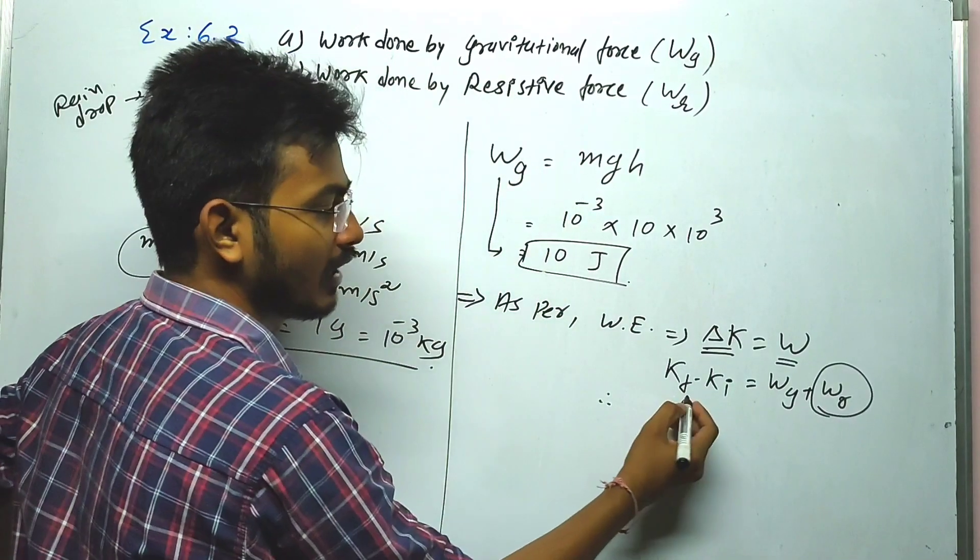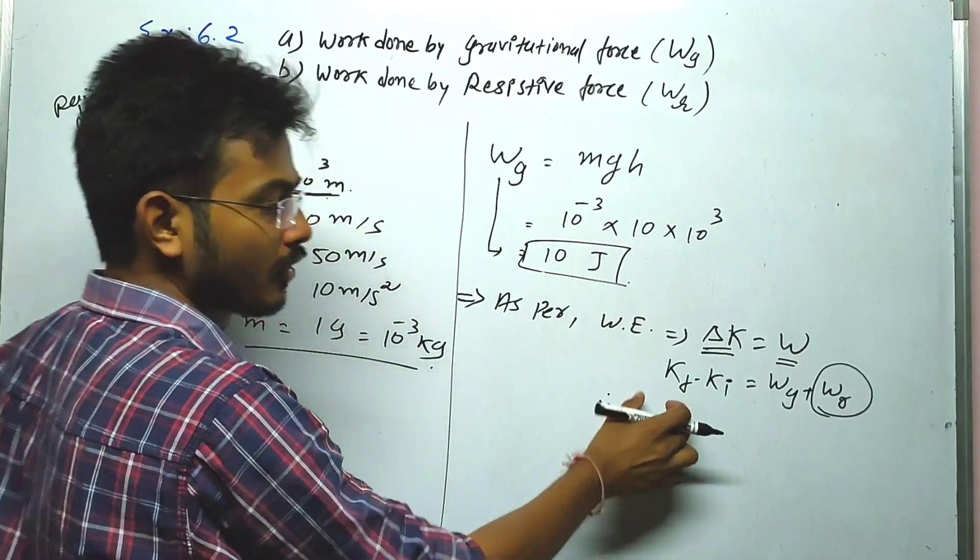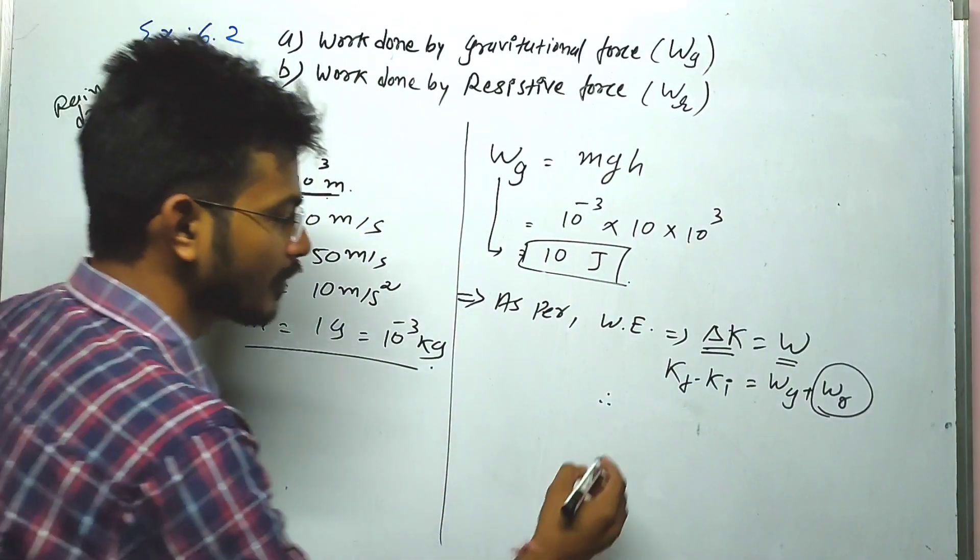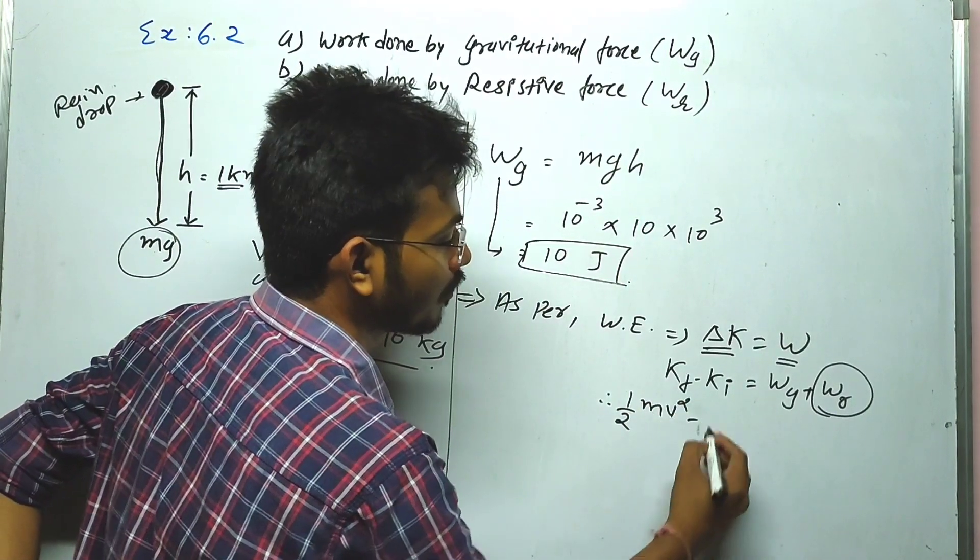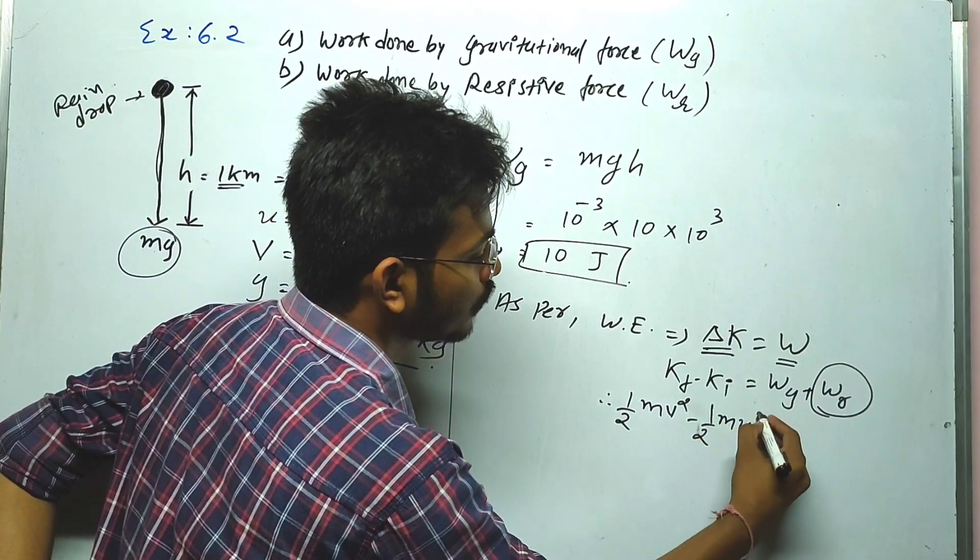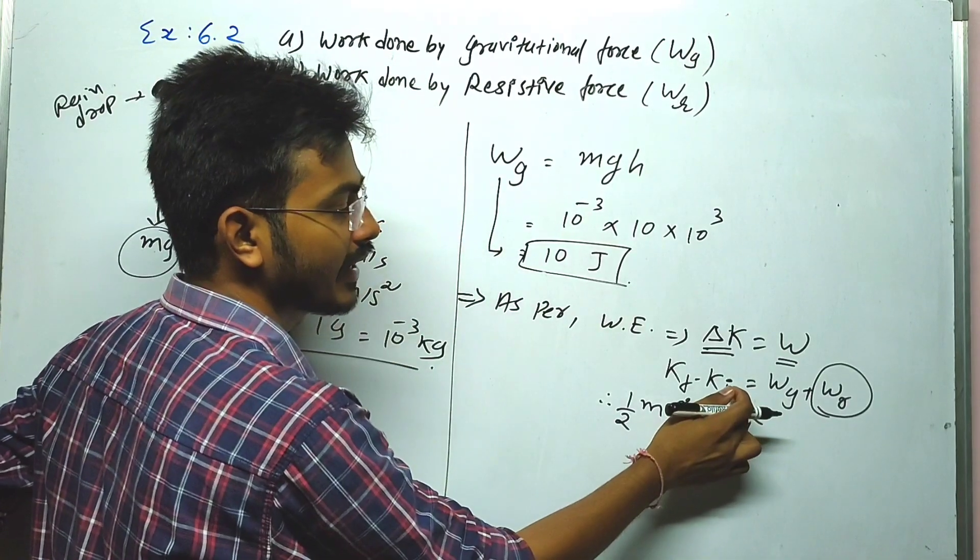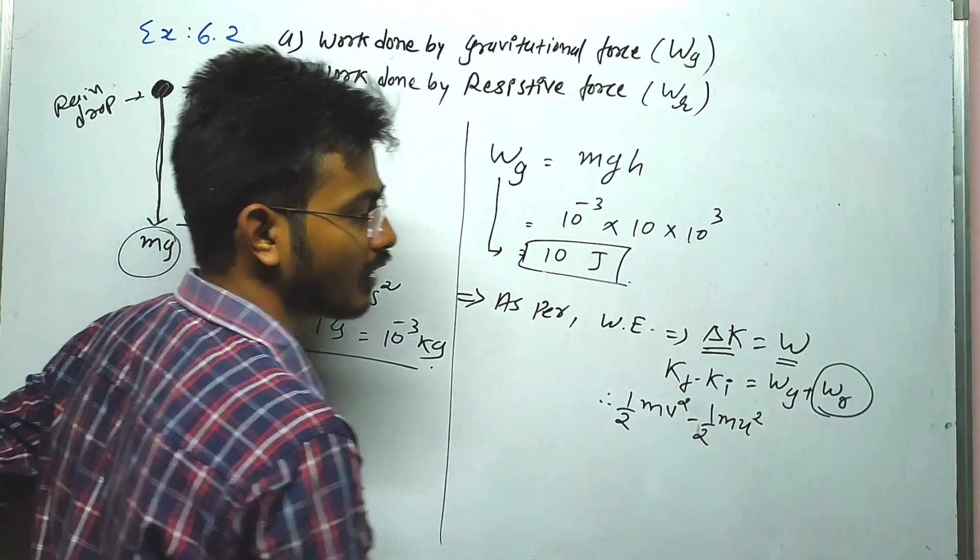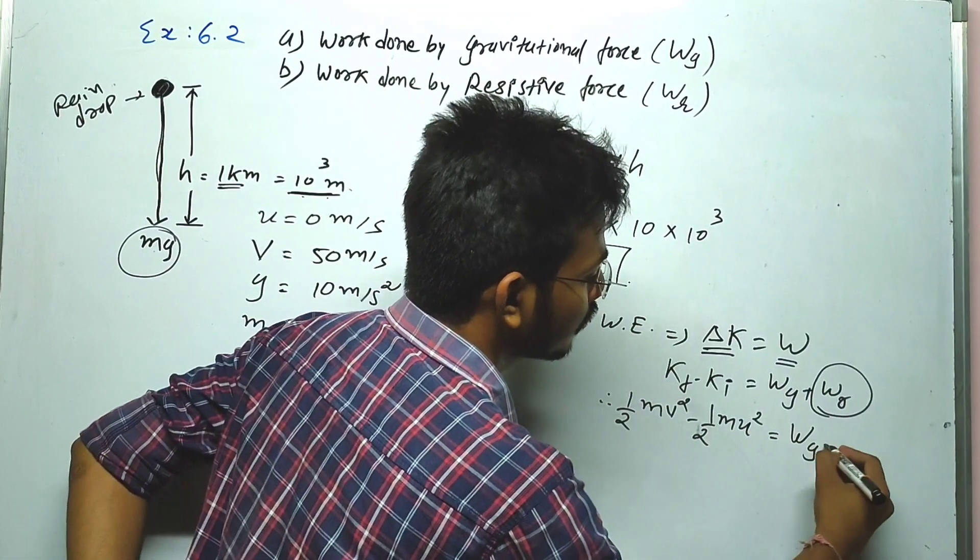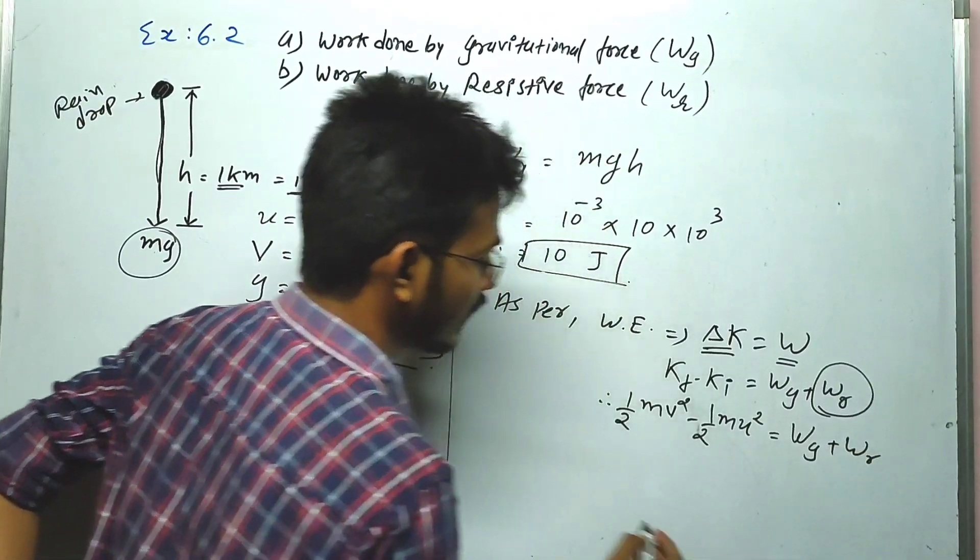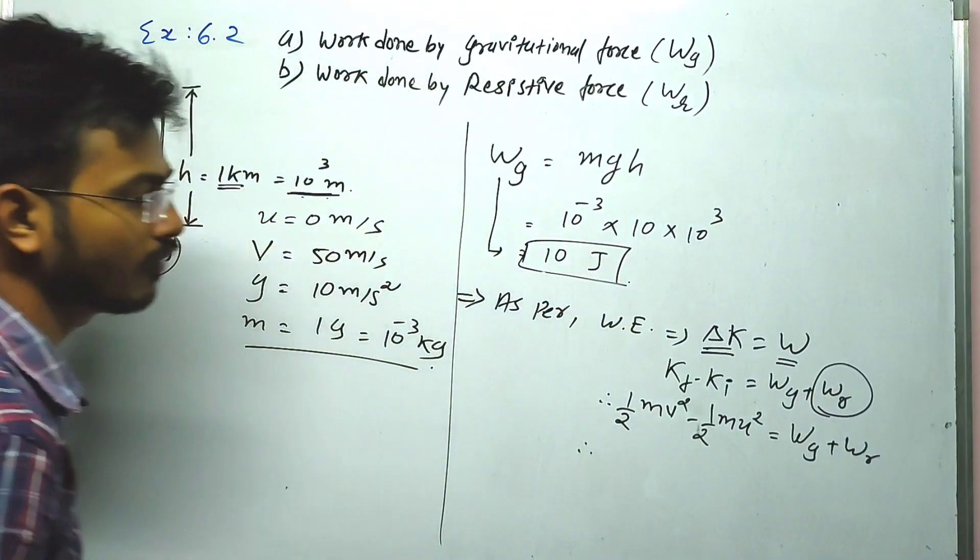Kinetic energy change is half m v squared minus half m u squared. U is initial velocity which is 0, v is final velocity. So the change in kinetic energy equals WG plus WR.